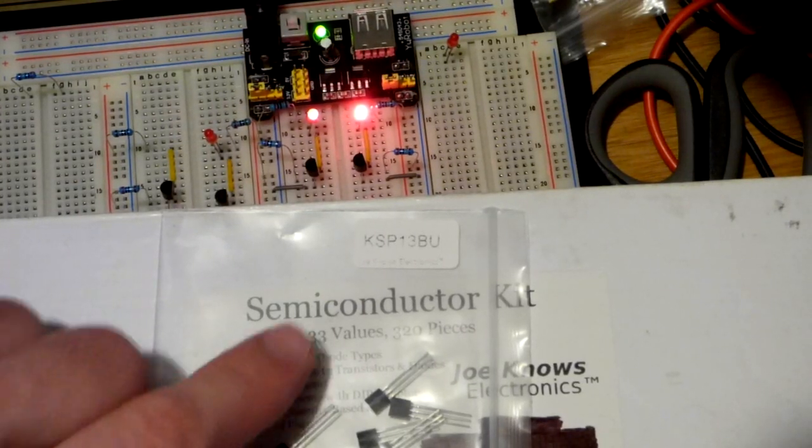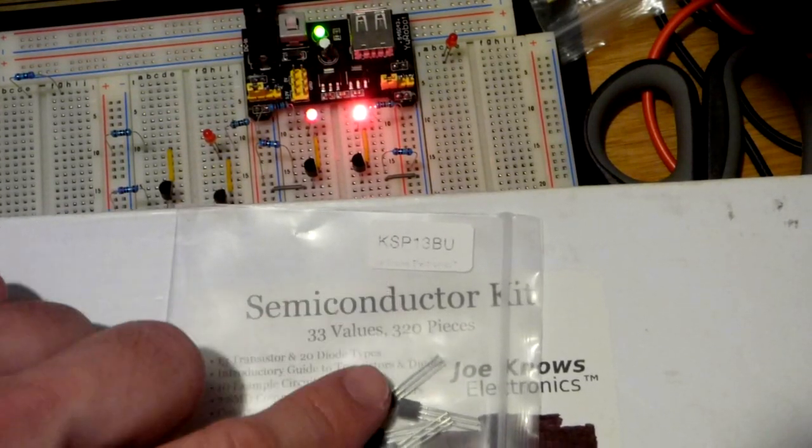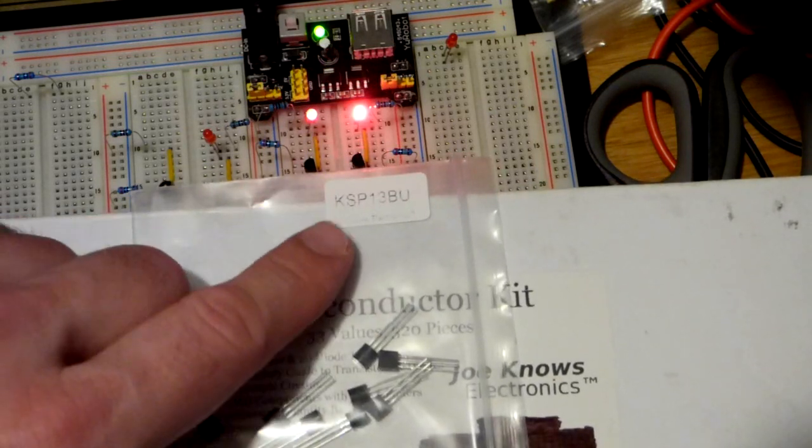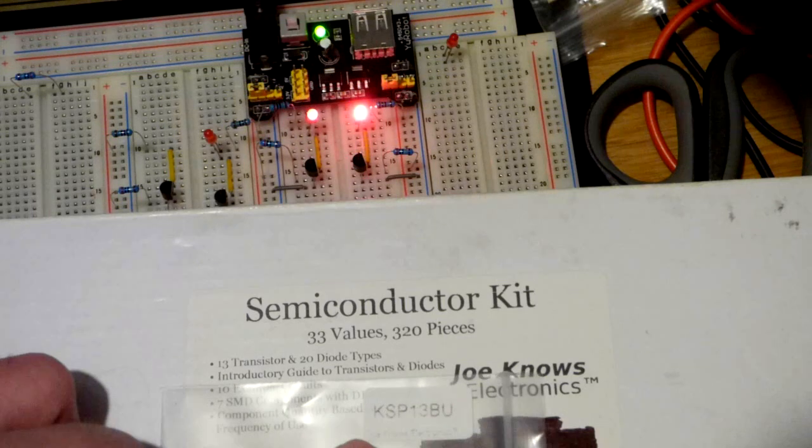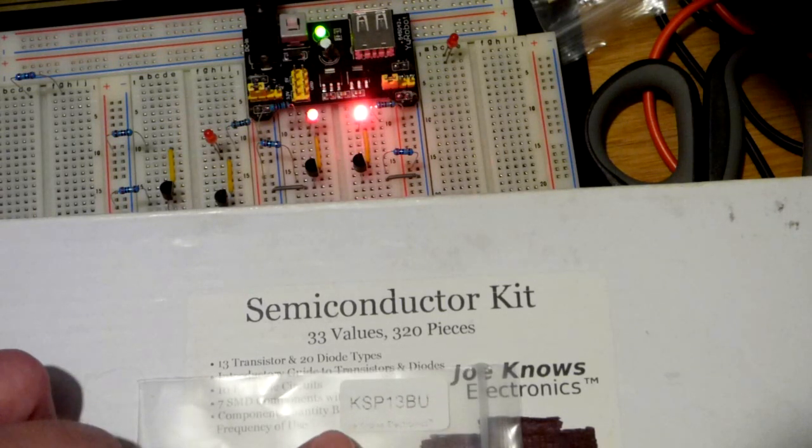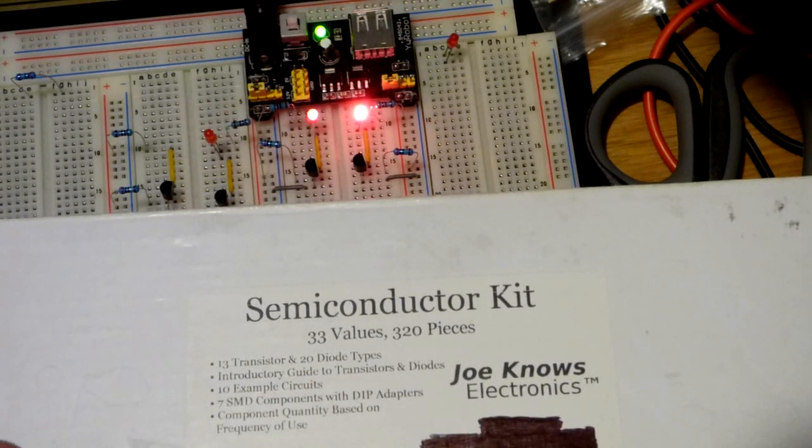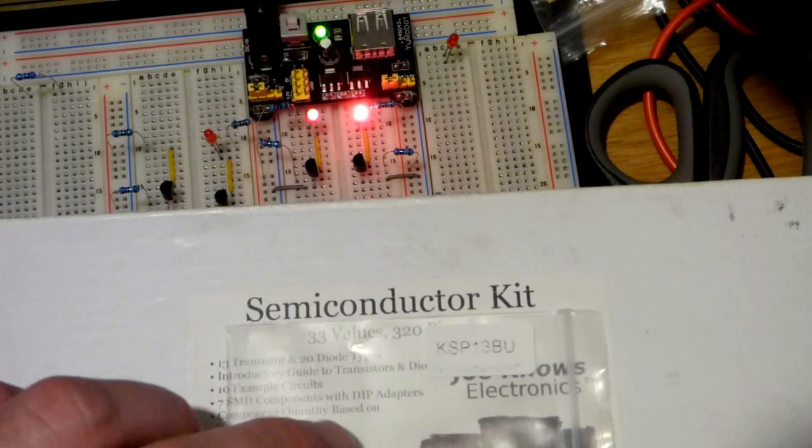So now that's the end of the video. I just want to mention that I got these Darlington pair transistors from this semiconductor kit from Joe Knows Electronics. So it's got 13 transistors and 20 diode types and some other stuff. But in any case, that's where I got it.